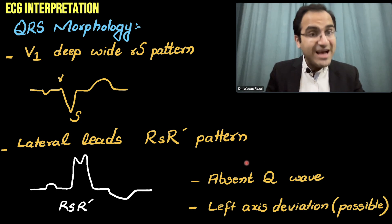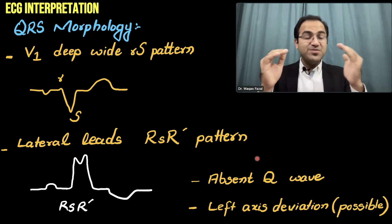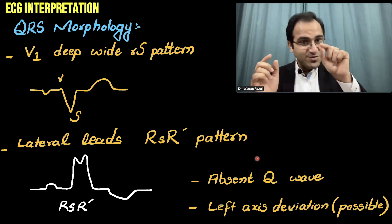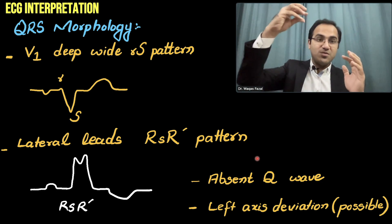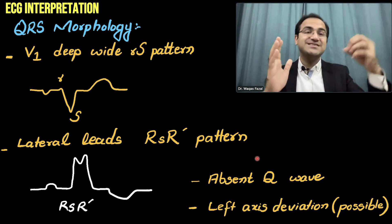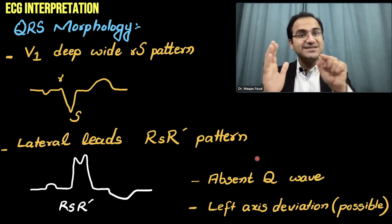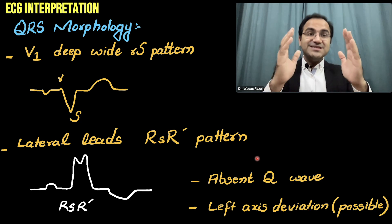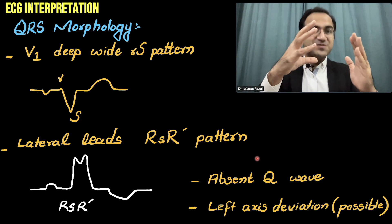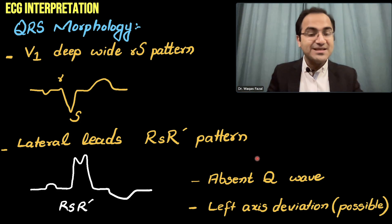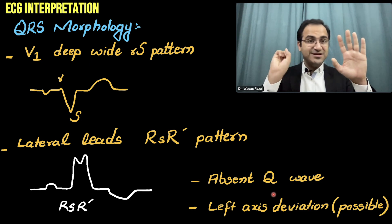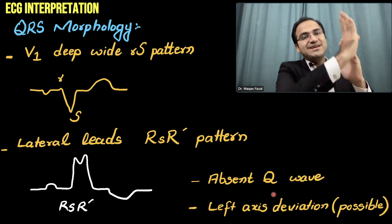The Q waves will be absent in left bundle branch block. Q waves appear due to septal depolarization — the small negative Q wave deflection occurs when the left side depolarizes first and sends signals to the right. Since the left side is blocked and the right side is sending signals to the left, you won't see the Q wave. There will also be left axis deviation because the current is flowing from the right side to the left side.